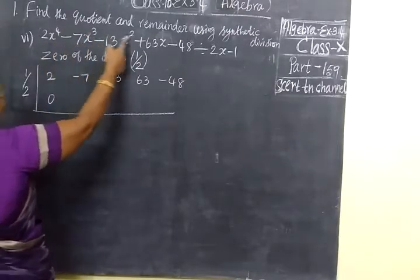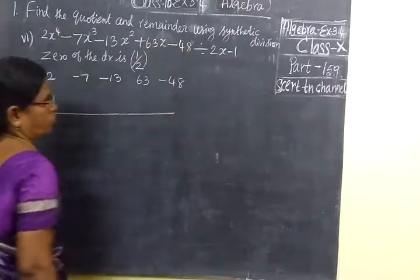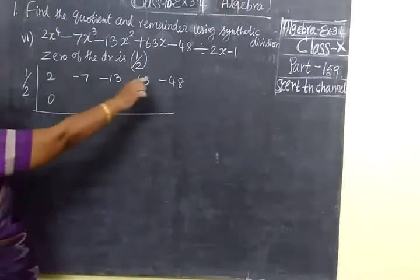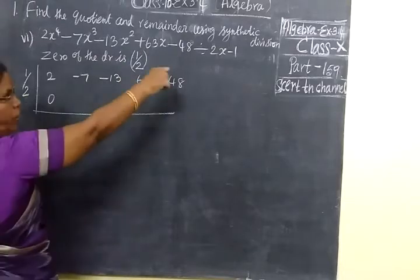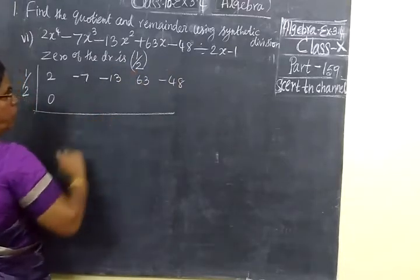Power 4, power 3, power 2, power 1, constant form. It is in the standard form. Zero of the divisor is minus or plus 1/2, and the x factor in our position is zero.